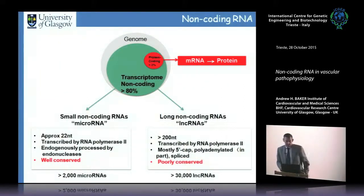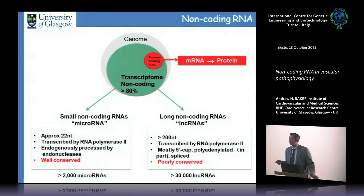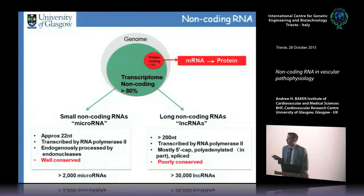We still work on adenoviruses for gene therapy applications; through consortia we're developing non-human adenoviruses for vaccines as well as cancer and cardiovascular gene therapy. Switching now to non-coding RNA work completely unrelated but related to vascular remodeling — work we've been doing for about five years. We're interested in microRNA and long non-coding RNA; lncRNAs are much more complicated and poorly conserved, making them difficult to work with, whereas microRNAs are very well conserved.